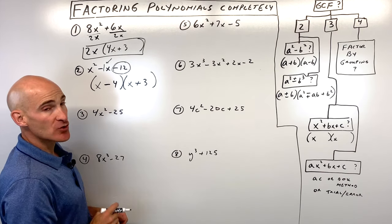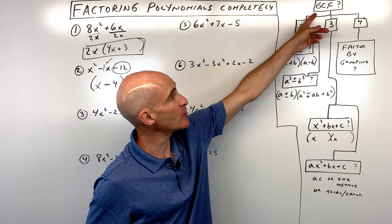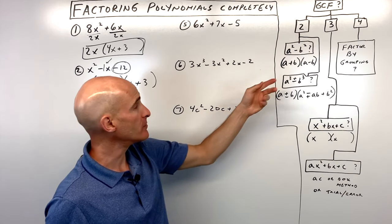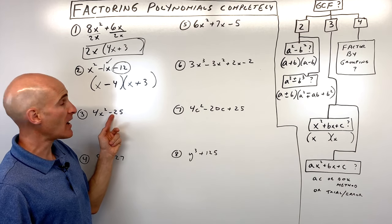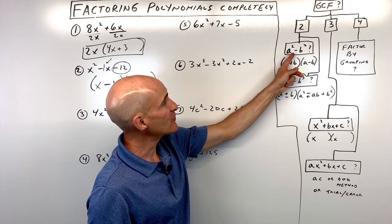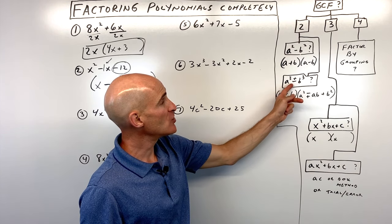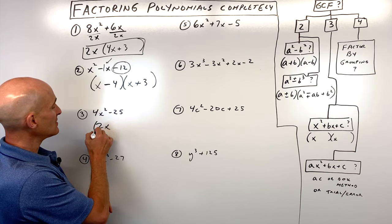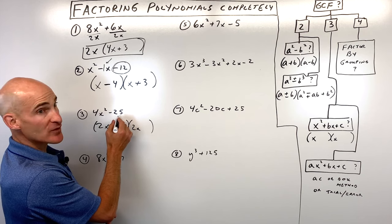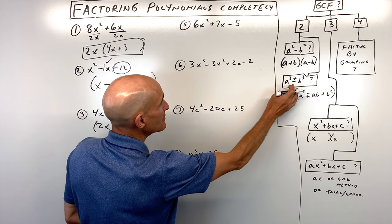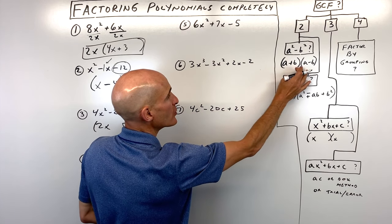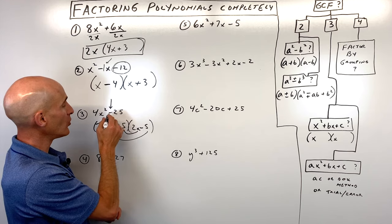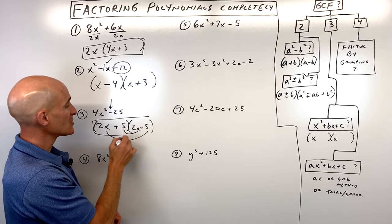Number three, we've got 4x squared minus 25. First, check the greatest common factor — there's nothing we can divide out of both terms. We have two terms, so we want to check: is it a difference of two perfect squares, or a sum or difference of two cubes? We can see that 4x squared is a perfect square because 2x times 2x, and 25 is a perfect square — that's 5 times 5. When we factor a difference of two squares, we get a sum and difference pattern: 2x plus 5 and 2x minus 5. The 10x and negative 10x cancel, which is why there's no middle term.